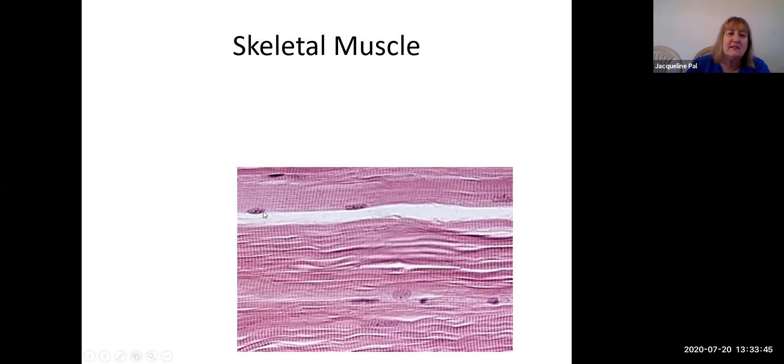And notice where the nucleus is, it's pushed off to the side. And that's because these stripes represent proteins, which are going to contract. And the cell is so full of these proteins because that's its job that it pushes the organelles off to the sides. You see how this doesn't look at all like that typical cell you learned about at the beginning?